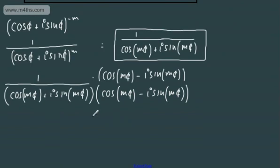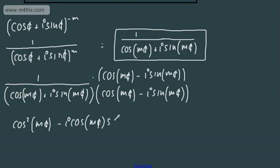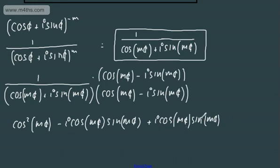Now let's consider what happens when we multiply through. On the denominator, we get a difference of squares: cos²(mθ), then minus i·cos(mθ)·sin(mθ), plus i·cos(mθ)·sin(mθ) — those middle terms cancel — and then minus i²·sin²(mθ). Since i² = -1, negative times negative 1 gives positive, so we end up with positive sin²(mθ).